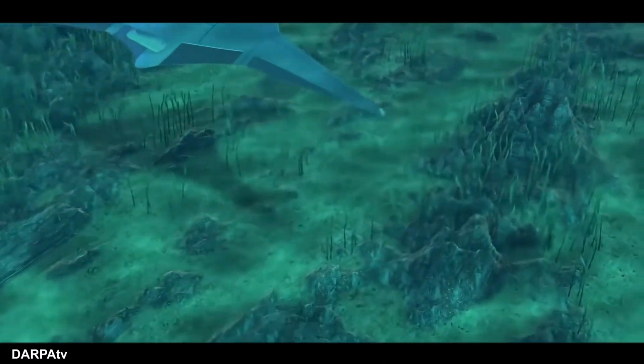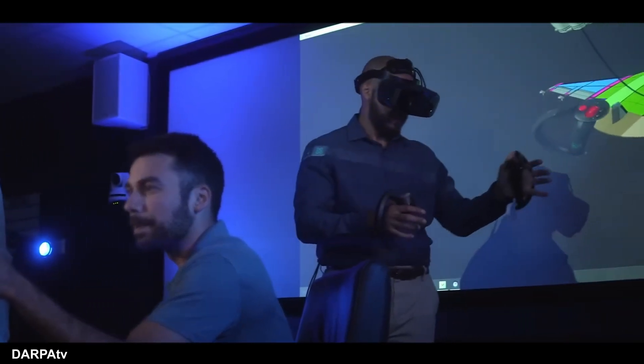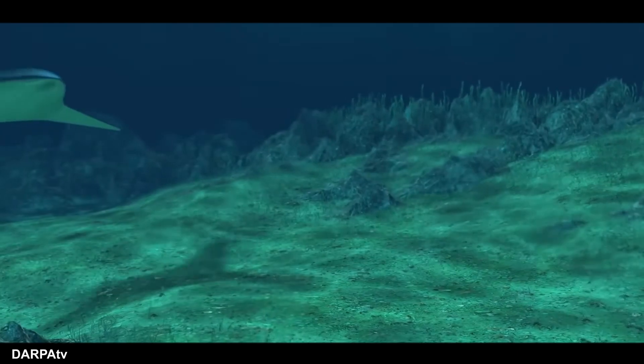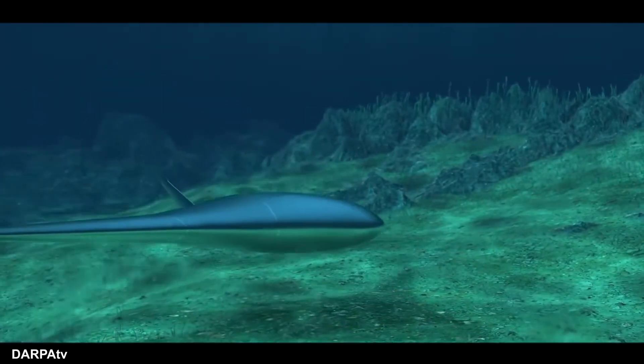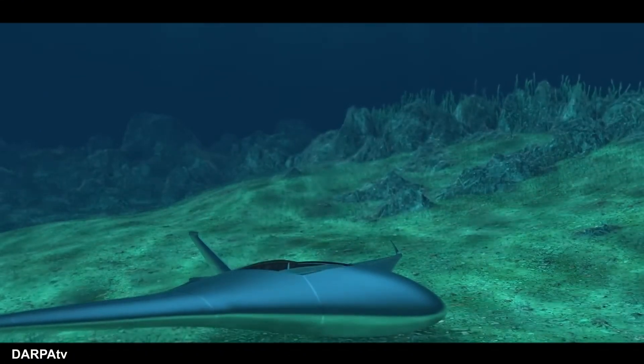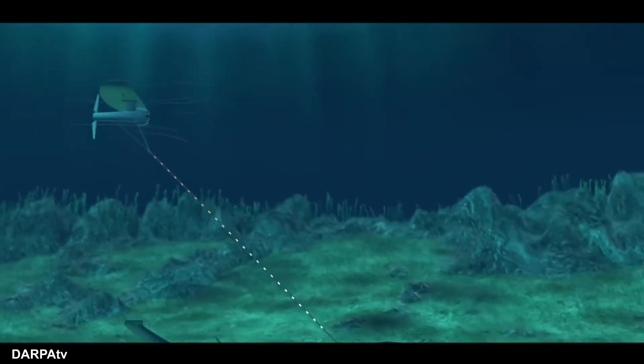The manta ray, a cutting-edge autonomous underwater vehicle (AUV), represents a revolutionary leap in underwater technology. Designed for minimal human intervention, the manta ray exemplifies advanced autonomous operations, stealthy design, and modular construction, making it a versatile and formidable tool for modern naval missions.